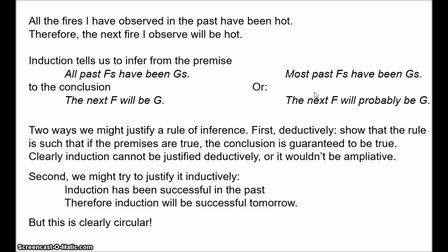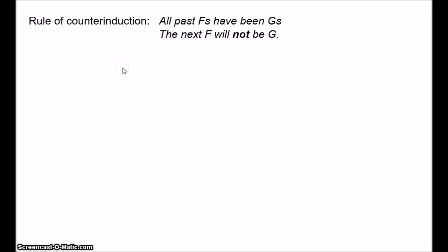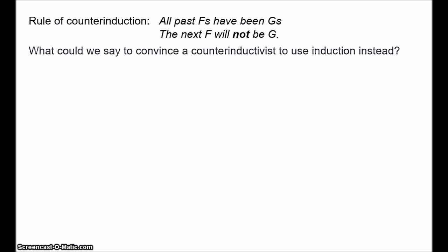We can drive home the point of Hume's argument by considering the perhaps rather strange person who is a counter-inductivist. The rule of counter-induction basically tells you to draw the opposite conclusion to induction. So you infer from 'all past F's have been G's' to 'the next F to be encountered will not be G.' So the counter-inductivist makes inferences like: every fire observed in the past has been hot, therefore the next fire observed will not be hot. We can think of the problem of induction as being the question: what would you say to a counter-inductivist to convince them to stop using this rule and to adopt the rule of induction instead?